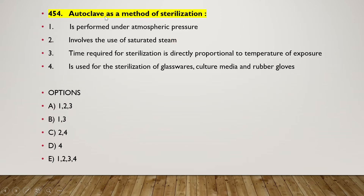The next question: autoclave as a method of sterilization — is it performed under atmospheric pressure, involves use of saturated steam, time required is directly proportional to temperature of exposure, or is used for sterilization of glassware, culture media, and rubber gloves? The right answer is option C — two and four: autoclave involves use of saturated steam and is used for sterilization of glassware, culture media, and rubber gloves.